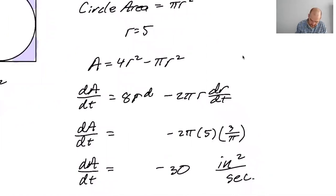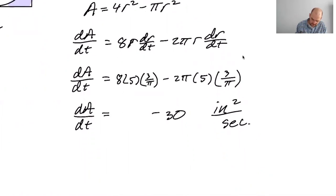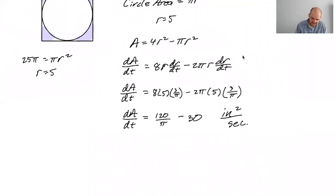Eight R dr/dt. This makes more sense. Eight R, R equals five, dr/dt is 3 over π. 120 over π. I mean, it's still weird because of the over π-ness, but 120 over π is definitely bigger than 30. This is good.